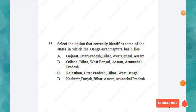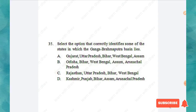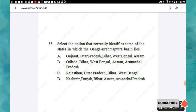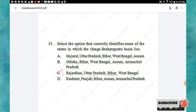Question 35: Select the option that correctly identifies some of the states in which the Ganga-Brahmaputra basin lies. The right answer is option C: Rajasthan, Uttar Pradesh, Bihar, and West Bengal.